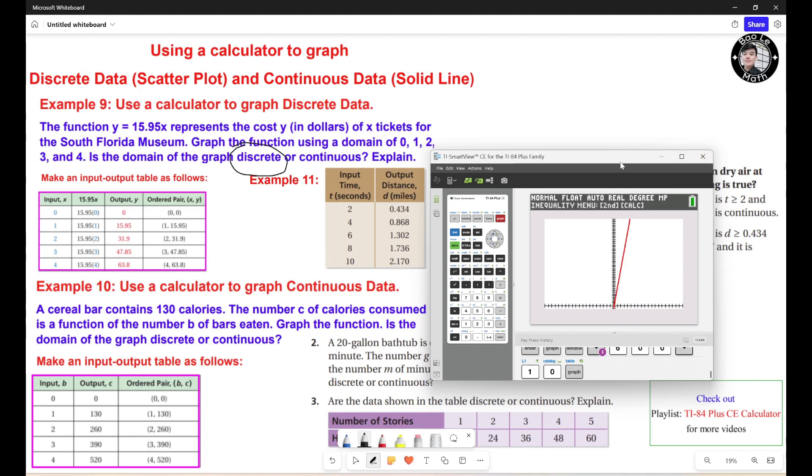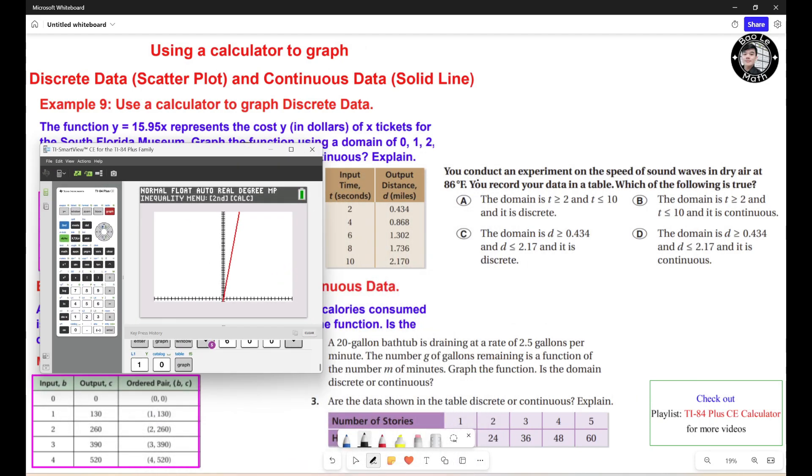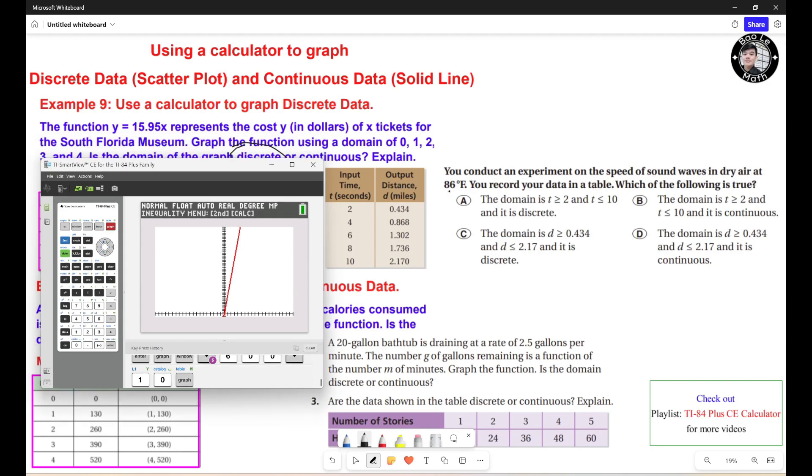Now, let's move on to the next one. Example number 11. This is the question type of the store. You conduct an experiment on the speed of sound waves in dry air at 86 degrees. You record your data in a table. Look at this table right here. Which of the following is true? Now, the input time is gonna be 2, 4, 6, 8, 10. The output distance is gonna be these numbers.